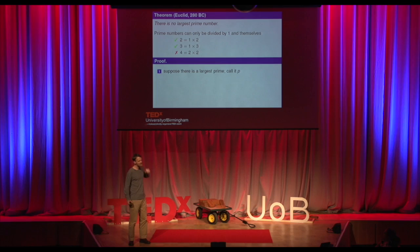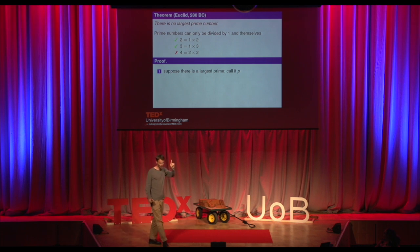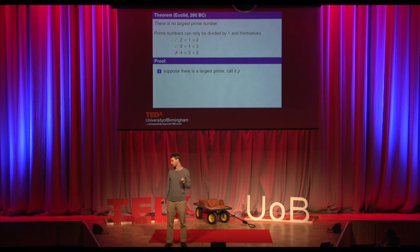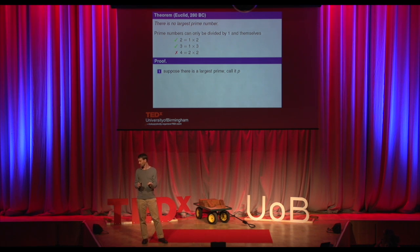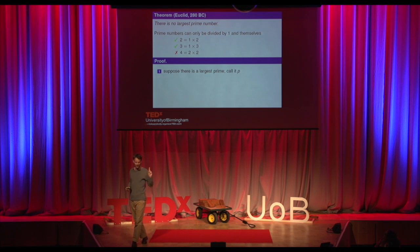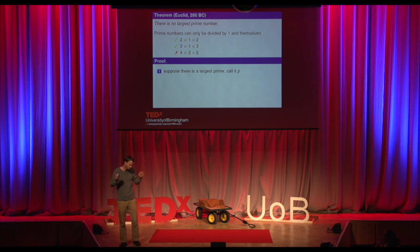So how does Euclid's theorem work? There are four steps in this proof. The first step is: let's suppose there is a largest prime number. He's going to prove that there's not a largest prime number, so he's going to start by assuming something that he's going to then try and show leads to a contradiction. We're starting by assuming there is a largest prime number, and we're going to call it P.